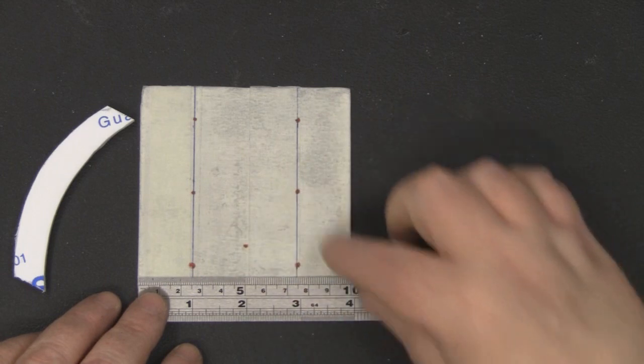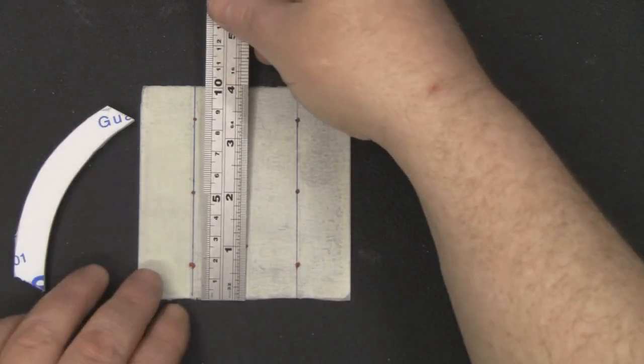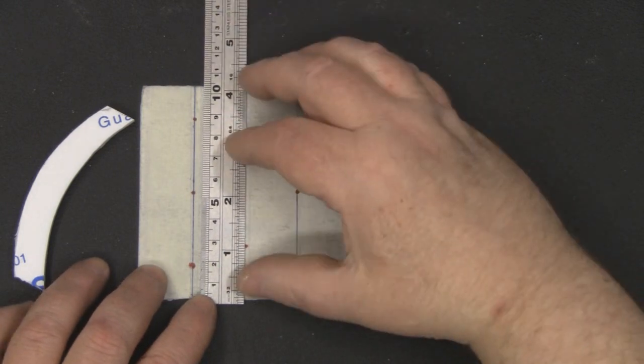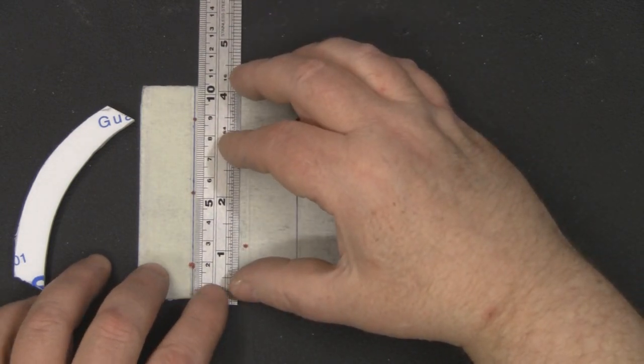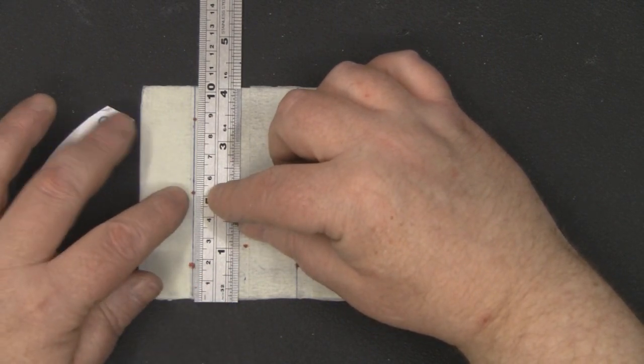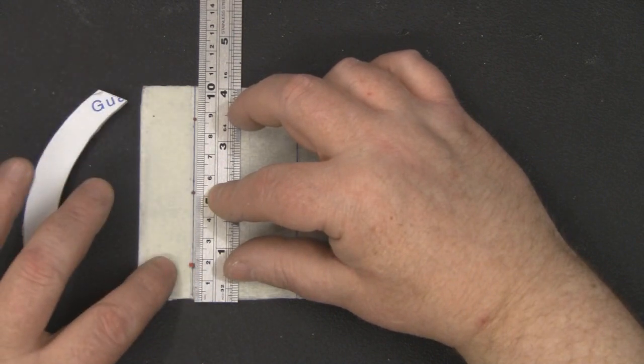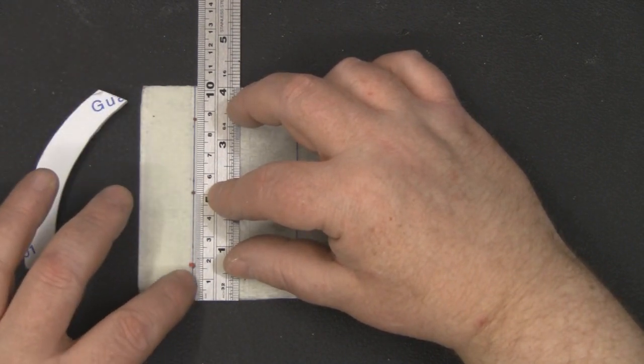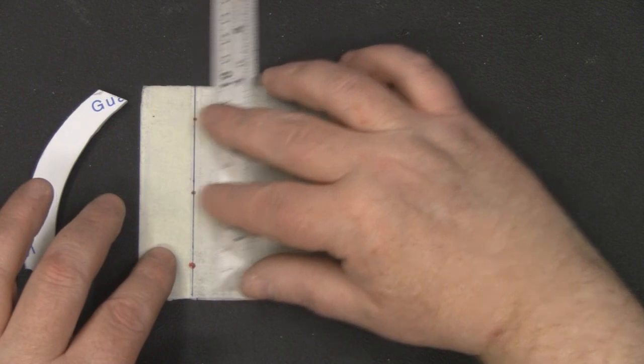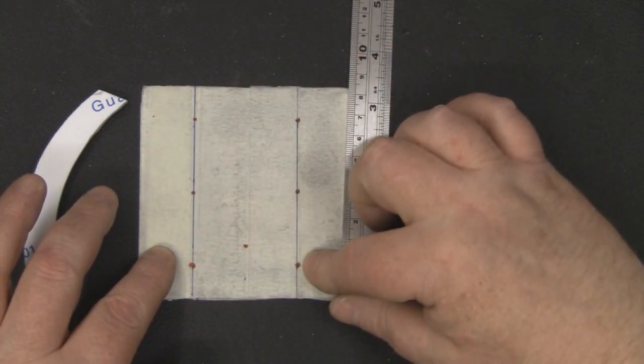For the support screws, because this is 100 millimeters by 100 millimeters, the center is actually 50 millimeters. I've put one screw dead center and the other two screws I've measured in 15 millimeters from each side, so the screw holes are nice and uniform. I've done the same on this side here.